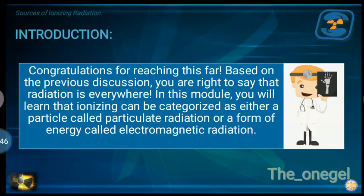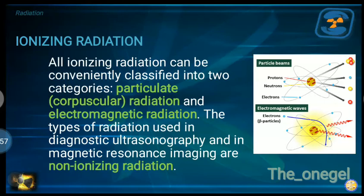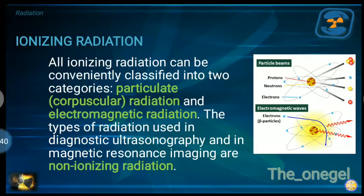We are going to distinguish particulate radiation and electromagnetic radiation. When we say ionizing radiation, these are types of radiation capable of ionizing matter — specifically through ionization, which is the removal of an orbital electron from the atom. After ionization, there will be a negative electron or negative ion, and the atom from which the electron was removed becomes a positive ion. The positive and negative ions combine to form the ion pair. All ionizing radiation can be classified into two categories: particulate, also called corpuscular radiation, and electromagnetic radiation.